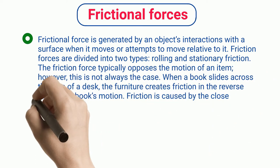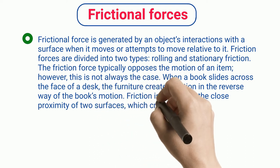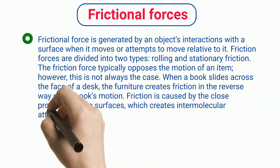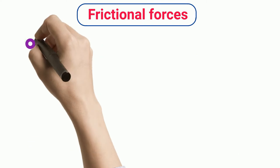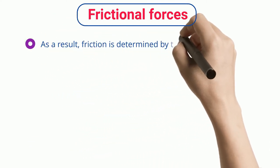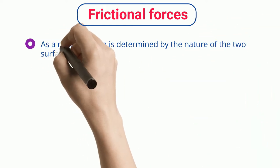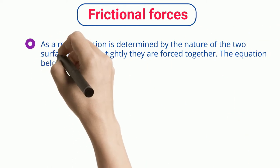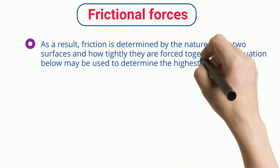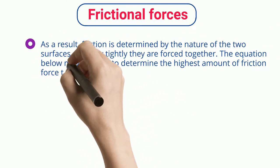Friction is caused by the close proximity of two surfaces, which creates intermolecular attractive interactions between molecules from distinct surfaces. As a result, friction is determined by the nature of the two surfaces and how tightly they are forced together. The equation below may be used to determine the highest amount of friction force that a material can exert on an object.